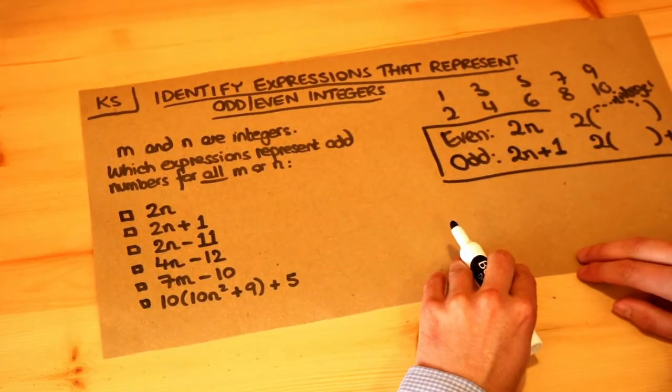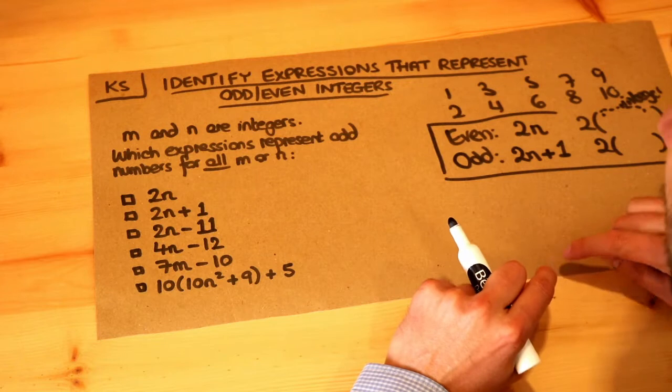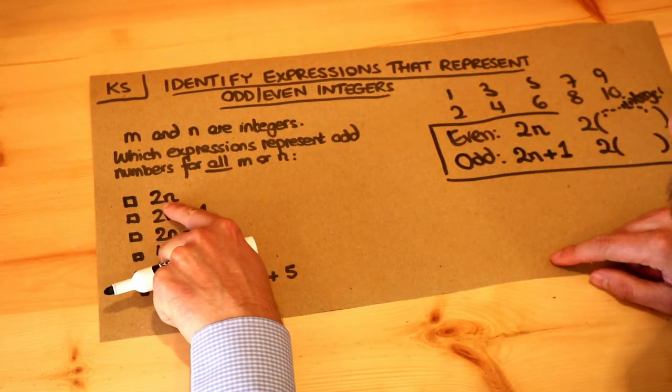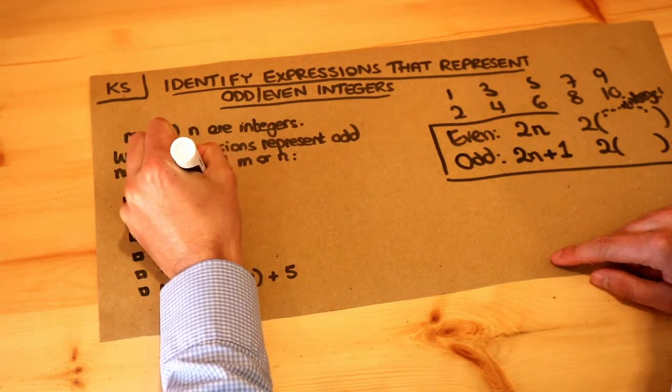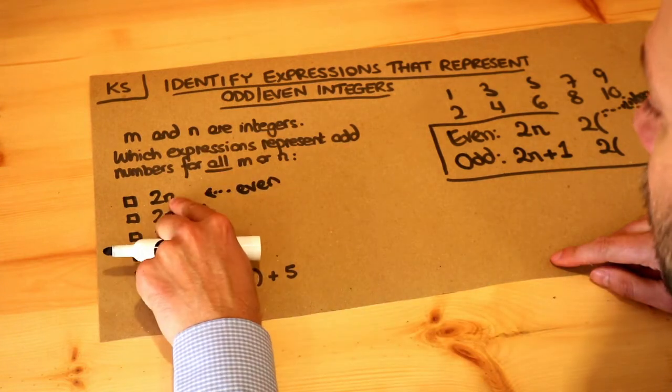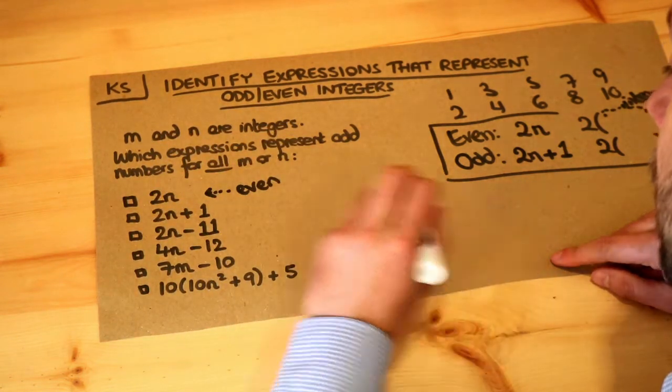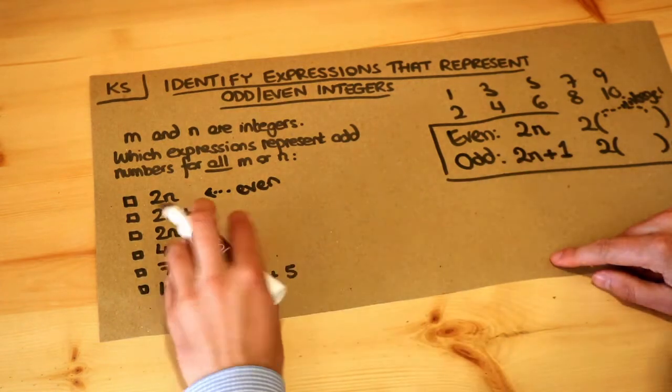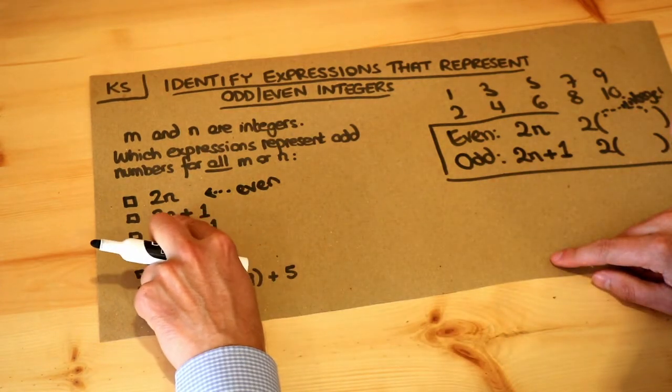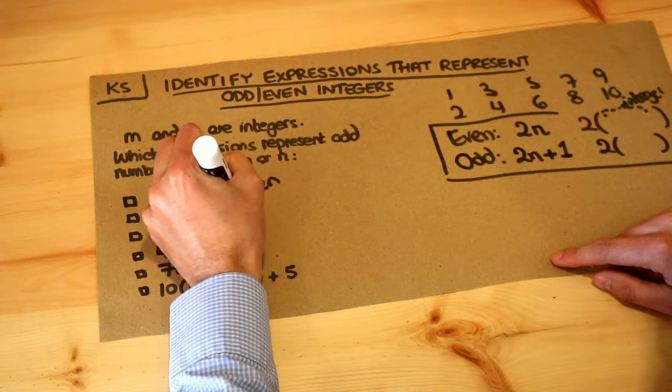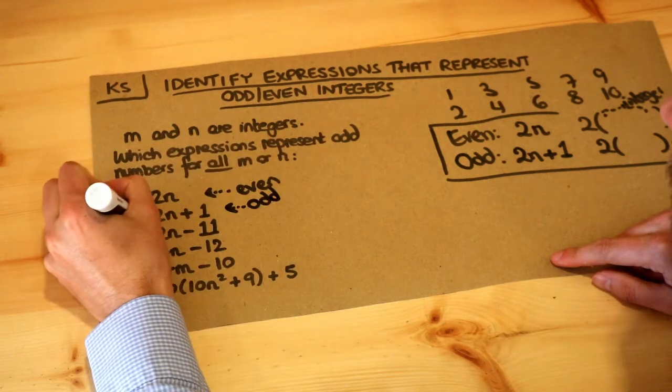So let's apply that principle to these examples here. Well, we already know that this one, 2n, is going to be even because it's 2 times a whole number. N is a whole number, an integer, so that must be even. And similarly, 2n plus 1 we saw over here is an odd number because it's 1 more than 2 times an integer. That is odd, so that one we're going to tick.